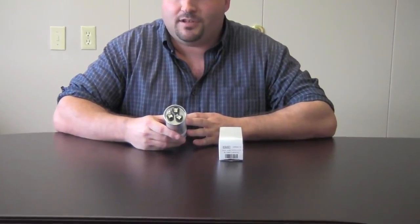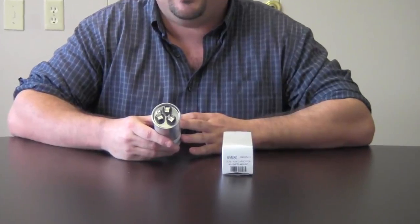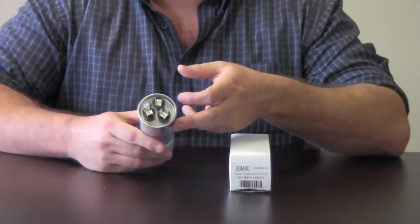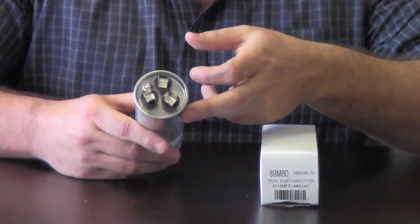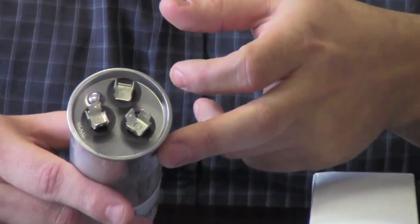You can see this is your dual run capacitor. This runs your fan motor and your compressor. Right here we have the C that goes for the common. That's where you're going to hook up your contactor.